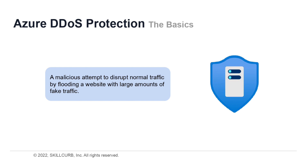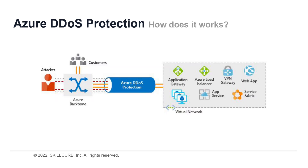Distributed Denial of Service, or DDoS, attacks are some of the largest availability and security concerns facing customers moving their applications to the cloud. A DDoS attack attempts to exhaust an application's resources, making the application unavailable to legitimate users. DDoS attacks can be targeted at any endpoint that is publicly reachable through the internet. When you combine DDoS protection with recommended application design practices, you help provide a defense against DDoS attacks.